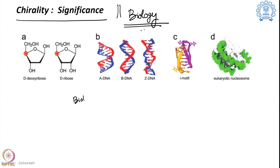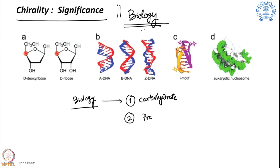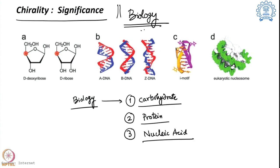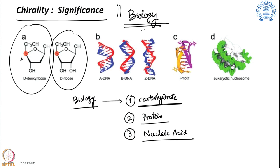These three are the major pillars of biological systems from very small to very large. If you look very closely at carbohydrates, the molecules have certain carbon centers such that they are chiral in nature — certain carbon centers create a mirror image that is not superimposable. So carbohydrates present in biology are majorly chiral.